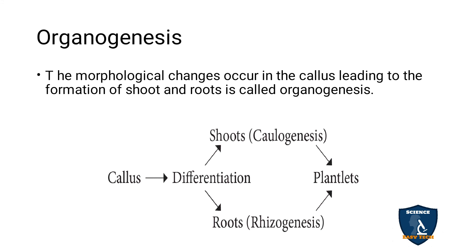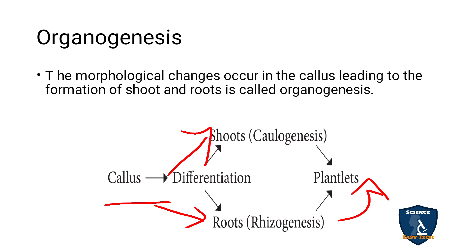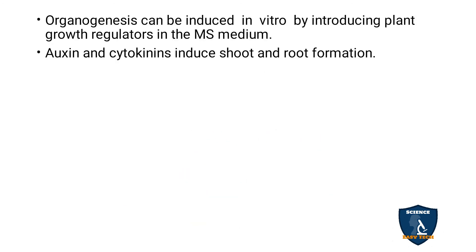Organogenesis: Due to morphological changes occurring in the callus, which lead to the formation of root or shoot, is called organogenesis. From the callus, the shoot is developed — that is called caulogenesis — and the root is developed — that is called rhizogenesis. From these, plantlets arise — this is called organogenesis. Organogenesis can be induced in vitro, done inside the laboratory using MS medium. Auxins and cytokinins are the growth hormones to induce root and shoot formation — they are needed for cell elongation and growth.